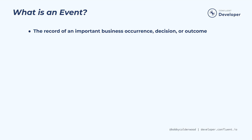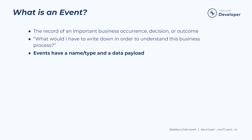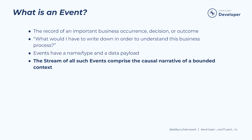A business event is the record of an important business occurrence, decision, or outcome. At this early stage of the modeling process, let's forget about software and systems, and instead think about record keeping with paper, snail mail, etc. We can ask ourselves: what set of outcomes would I have to write down in order to keep track of this business process if I was using paper and pencil? These events have a name or a type, as well as a data payload. The sequence or stream of all such business events comprise the causal narrative of a bounded context or a business domain.